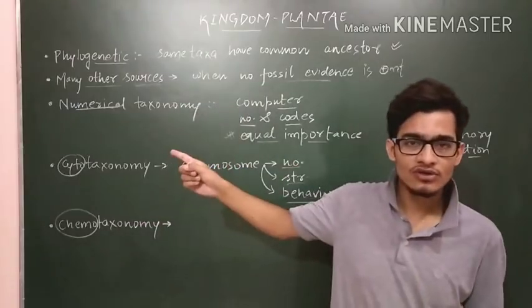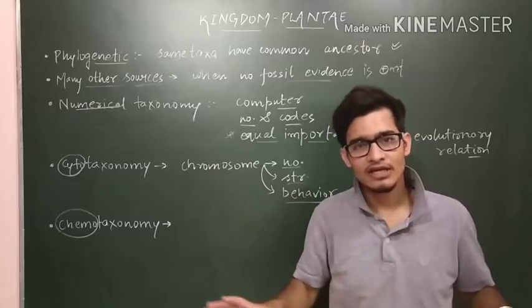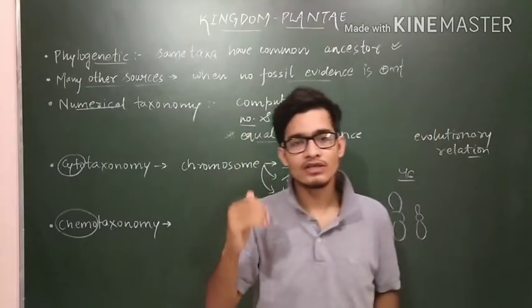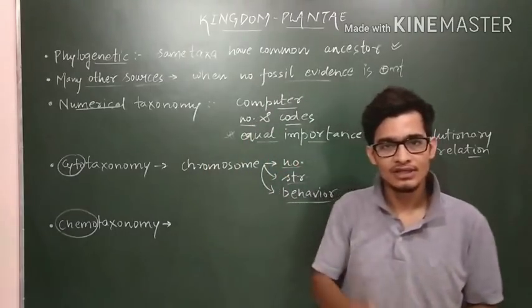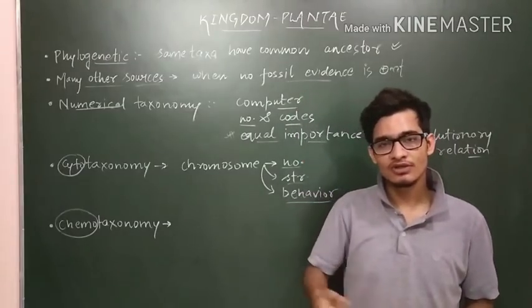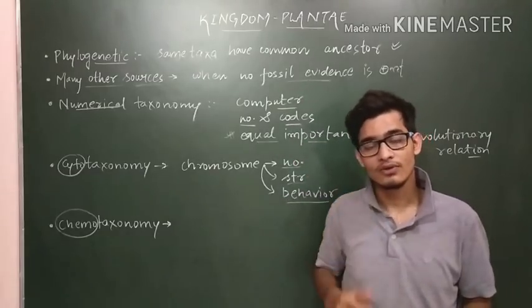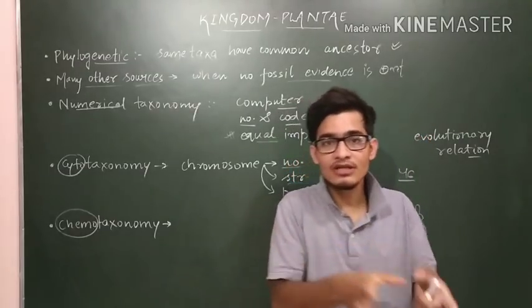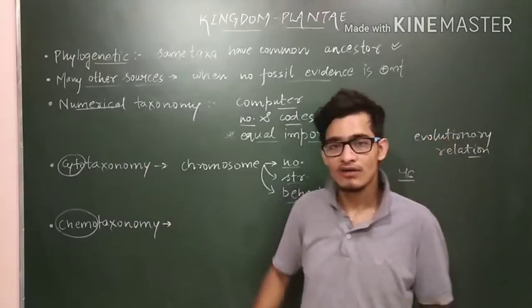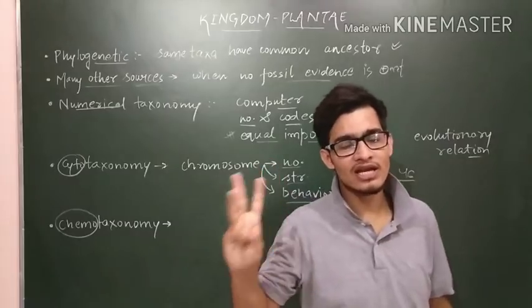So in summary: numerical taxonomy concludes that no matter how many characters you have, with a computer and serial number codes you can easily manage. The second is chemotaxonomy, based on chemicals present in a plant — similar to the term phytochemistry mentioned in the last lecture. After that cytotaxonomy looks at chromosome number, structure, and behavior inside the cell.